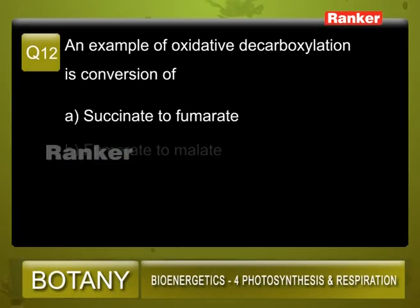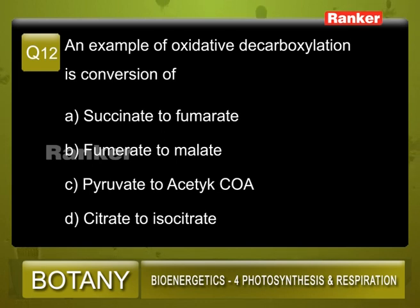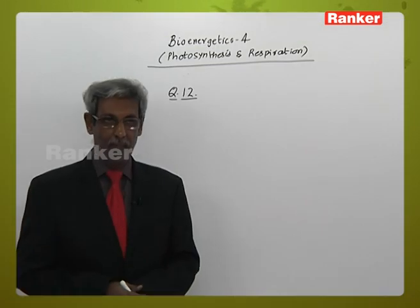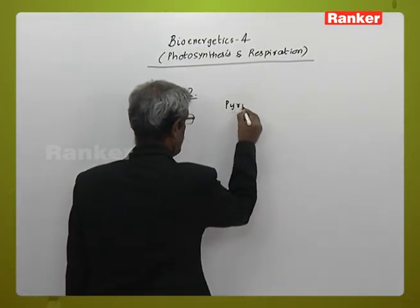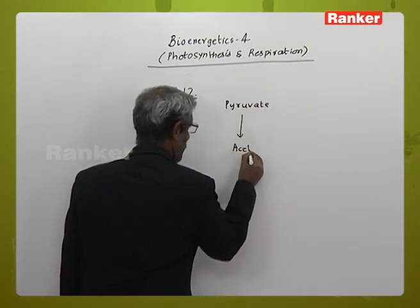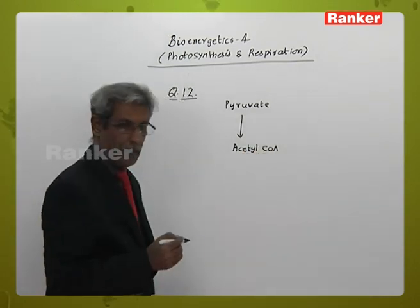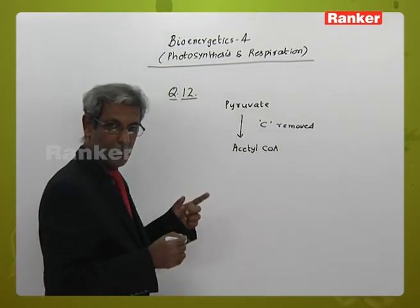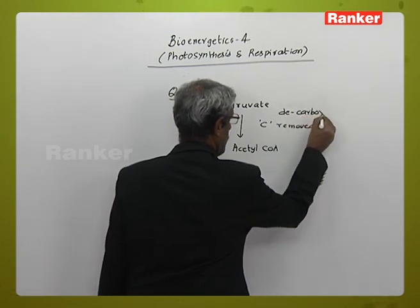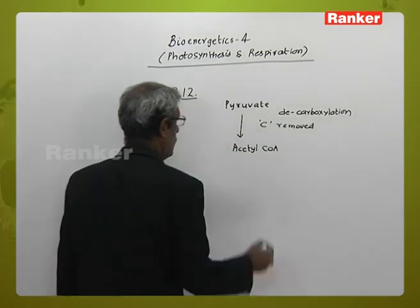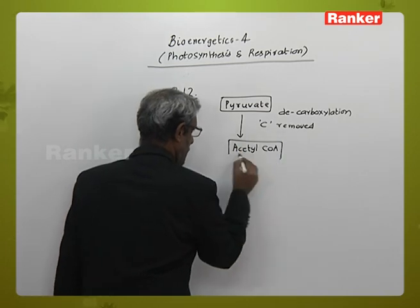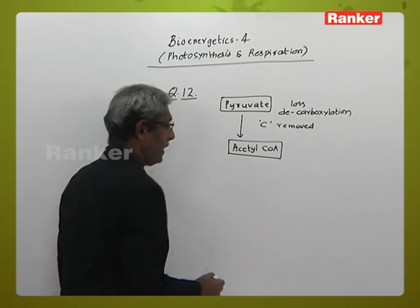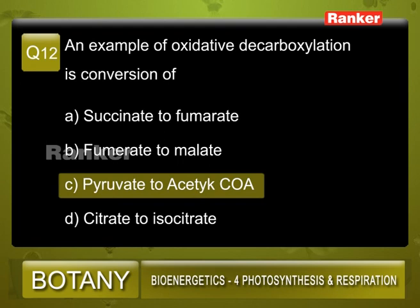Question number 12: An example of oxidative decarboxylation is the conversion of — A: succinate to fumarate, B: fumarate to malate, C: pyruvate to acyl coenzyme A, D: citrate to isocitrate. When pyruvate is converted to acyl coenzyme A, carbon is removed. The removal of carbon is termed as decarboxylation. The link between pyruvate and acyl coenzyme A with the loss of a carbon is termed decarboxylation. The answer is C.